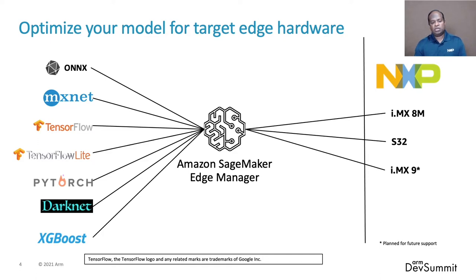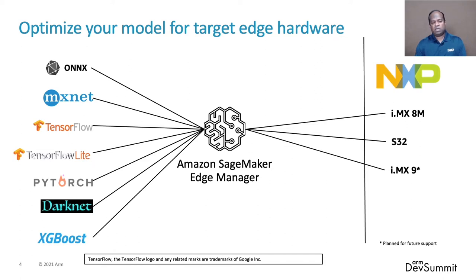Once a model is developed, it must be converted and optimized for the edge device to run efficiently. SageMaker Edge uses SageMaker Neo to compile a model for a wide variety of devices. Your models can be compiled to run on the edge device for low-power CPUs, GPUs, or NPUs such as the NXP i.MX 8M Plus SoC. Once a model is compiled, SageMaker Edge packs the model with its runtime and device-specific credentials. Then you can use AWS IoT Greengrass or your own deployment mechanism to deploy the model and runtime package onto your end device.